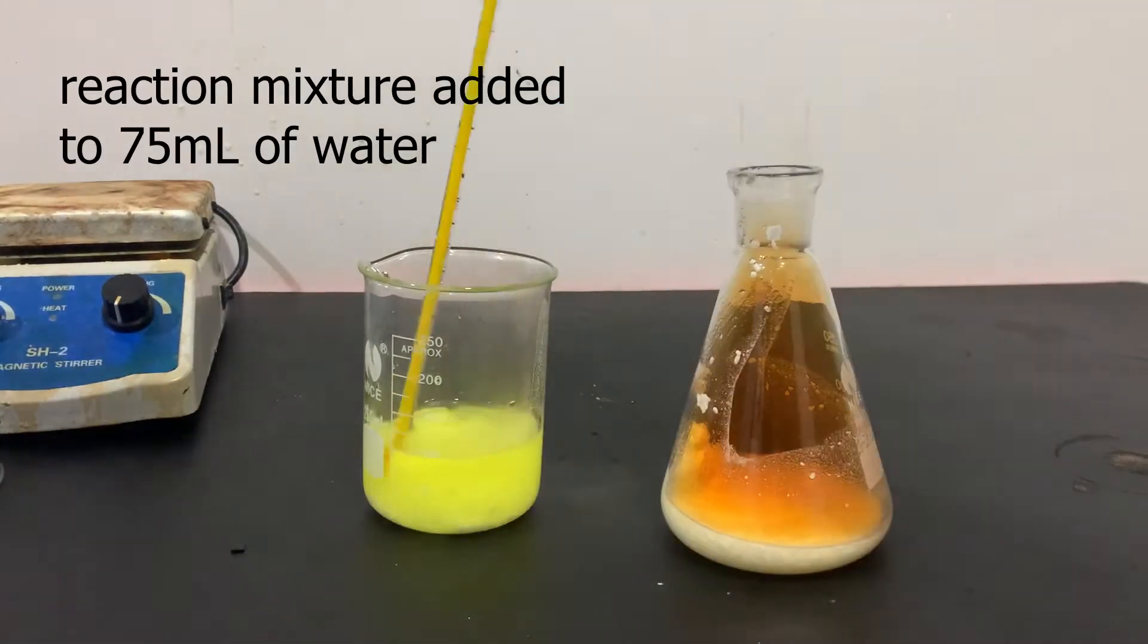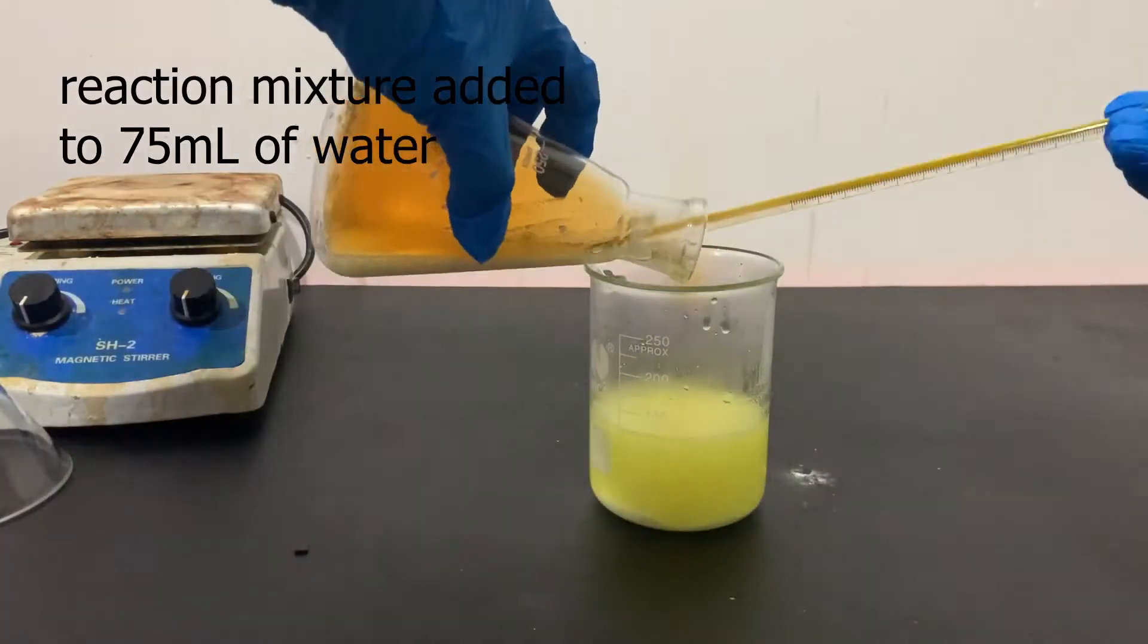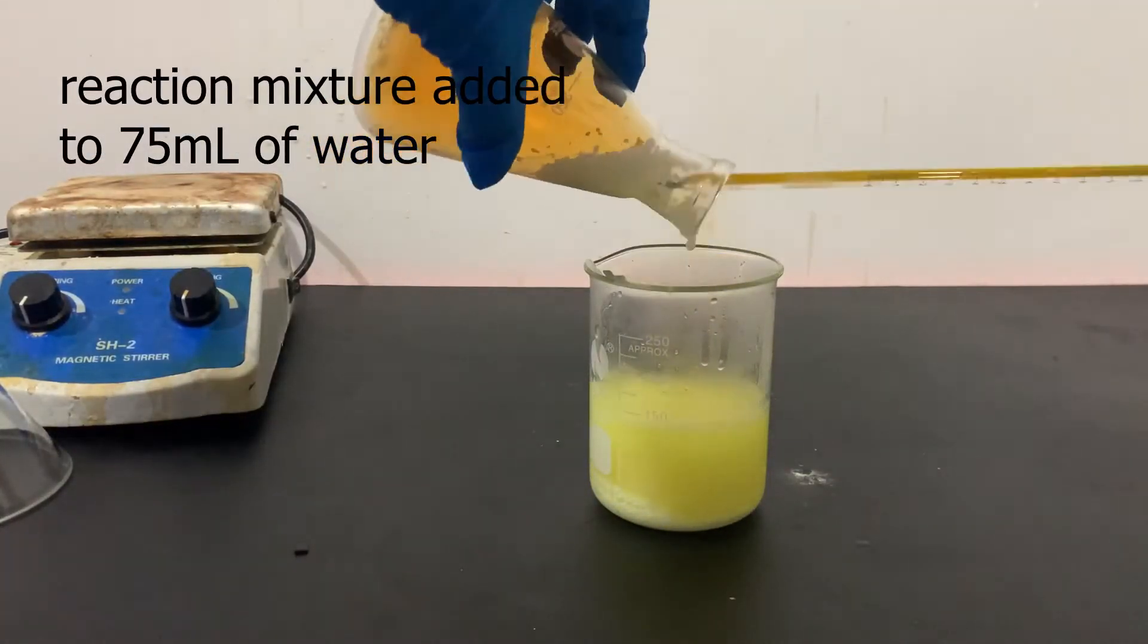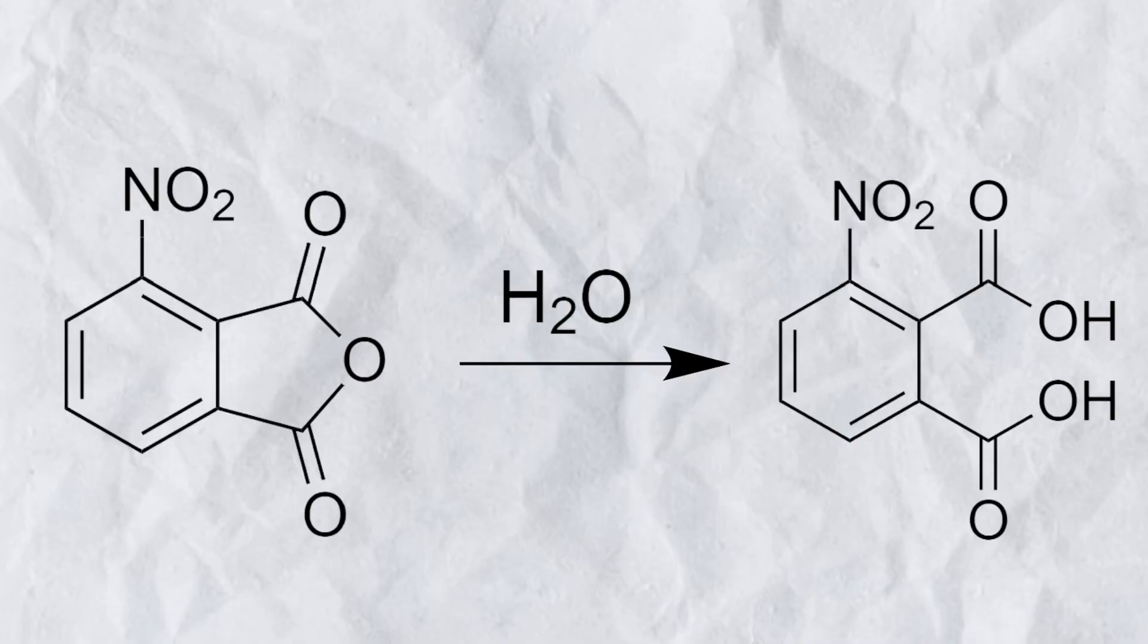After two hours, I let the flask cool down and then add it to 75 milliliters of water. When 3-nitrophthalic anhydride is added to water, it hydrolyzes to 3-nitrophthalic acid.